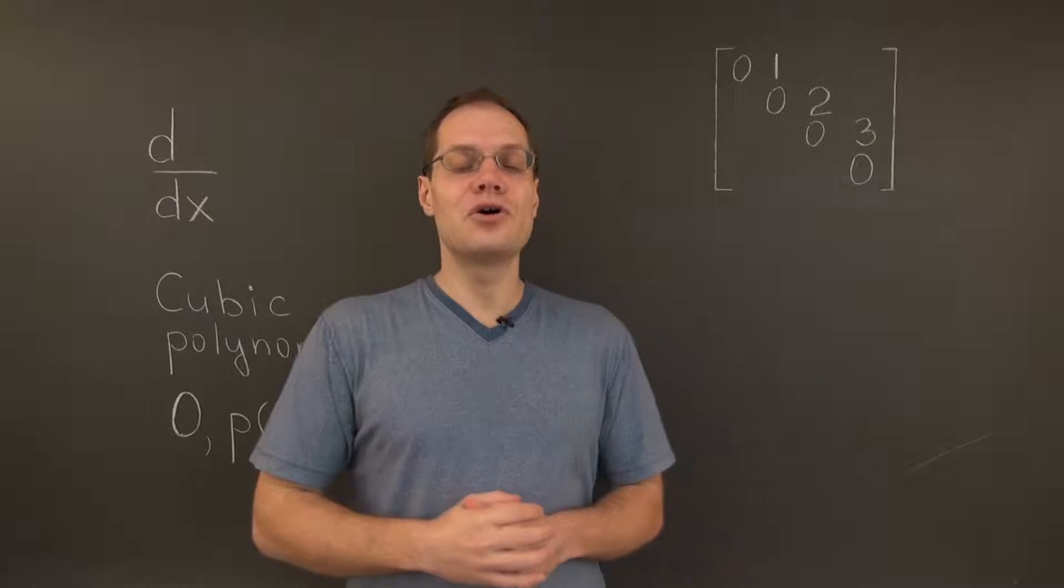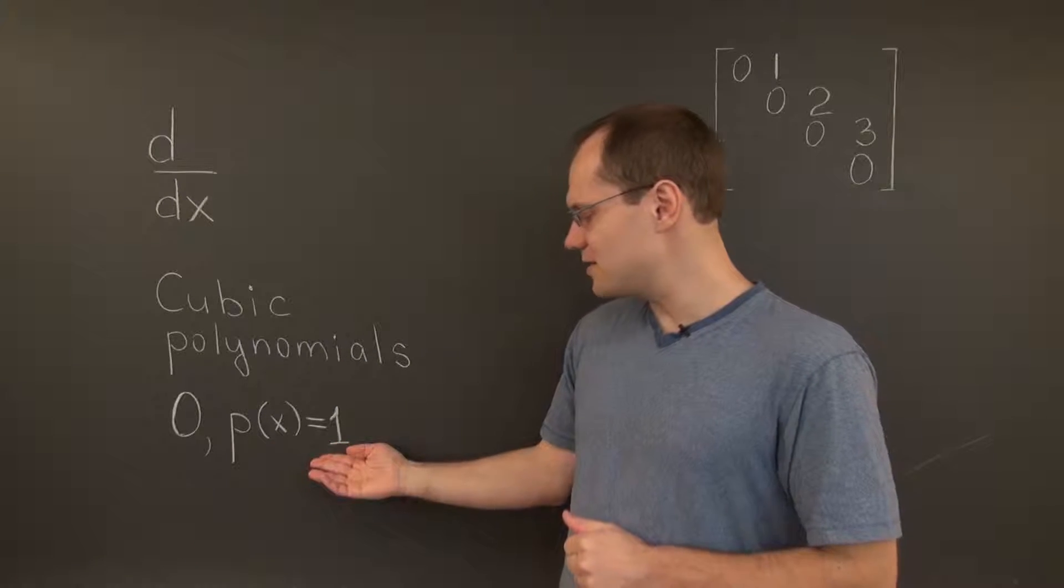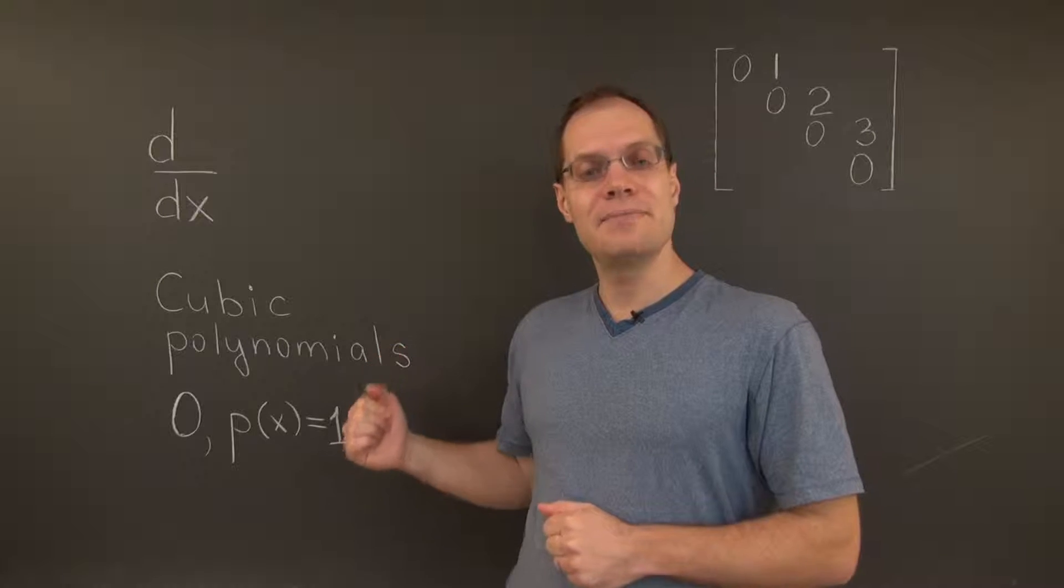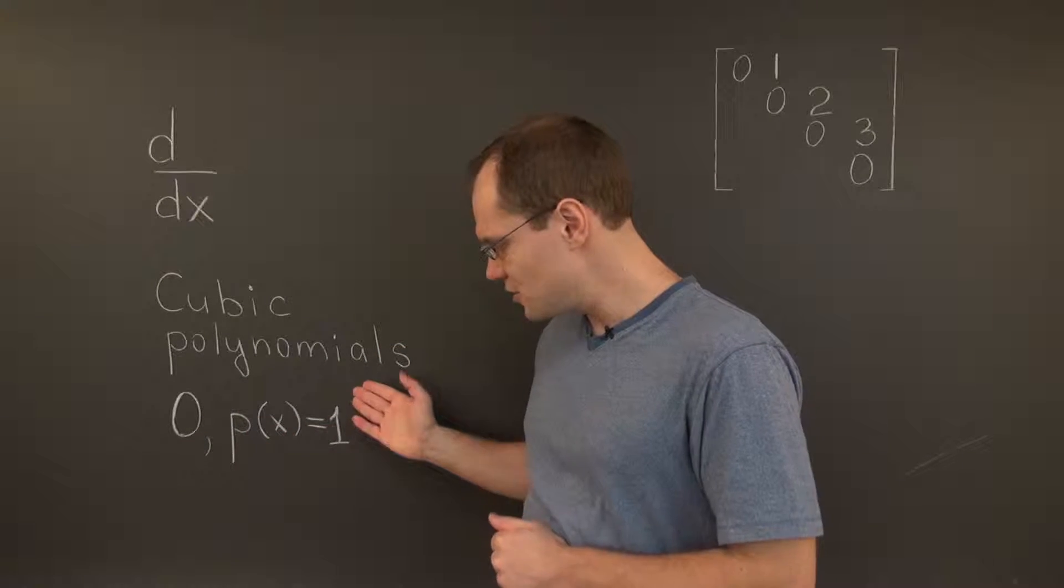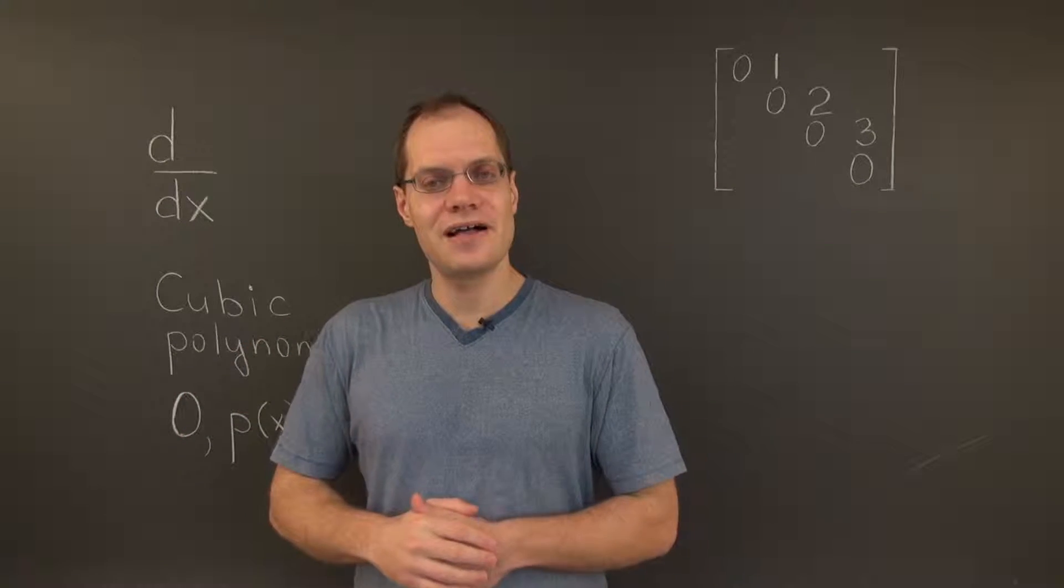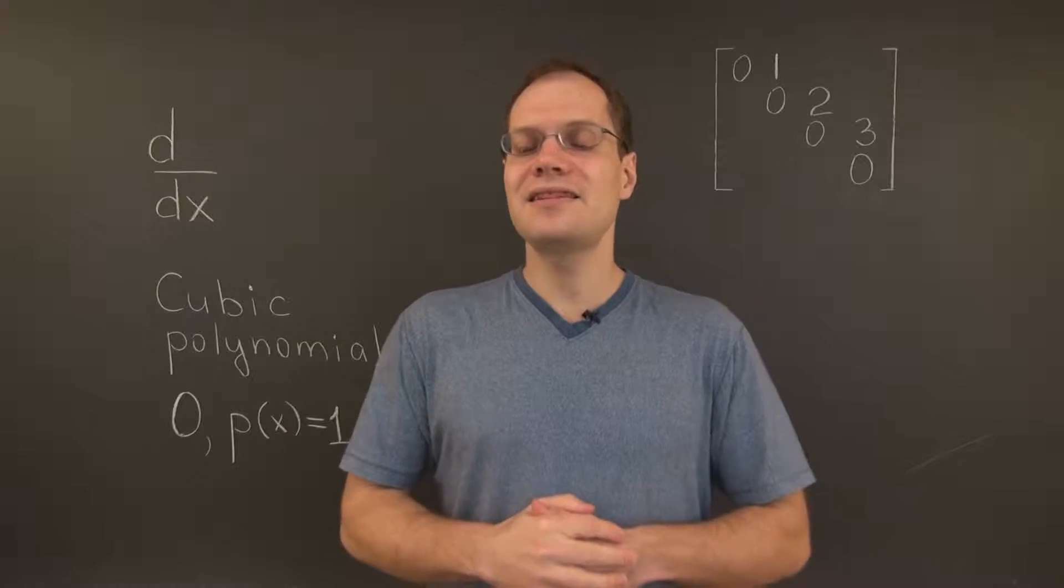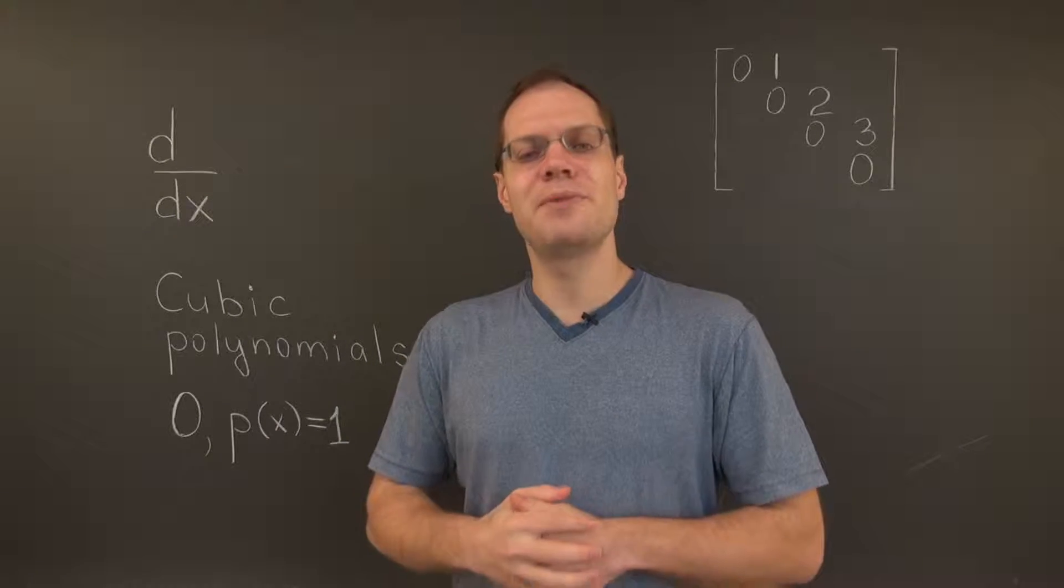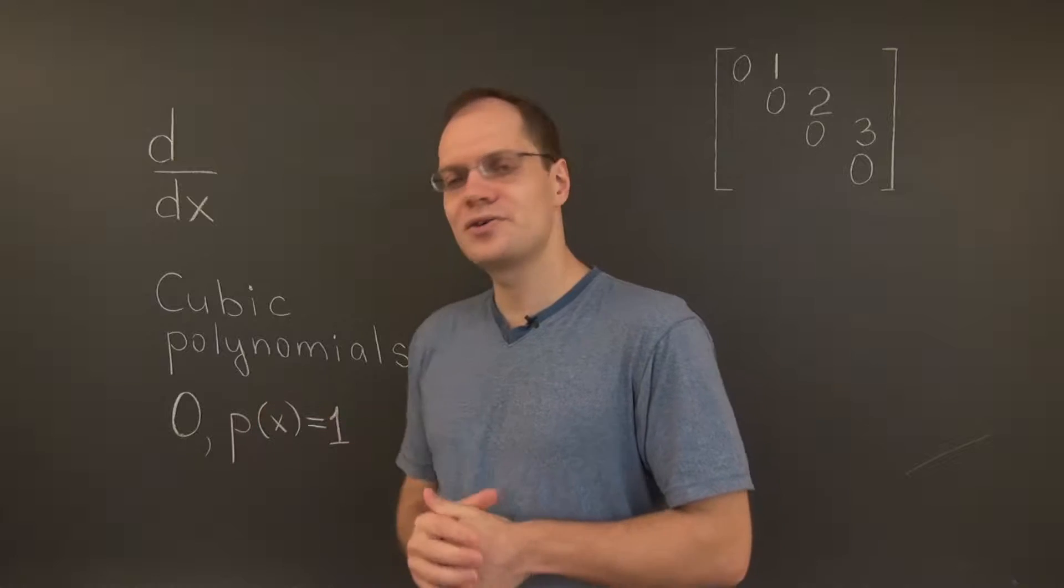The corresponding eigenfunction is constant polynomials, and so the dimension of the eigenspace corresponding to this eigenvalue is 1. And that's the geometric multiplicity of the zero eigenvalue.